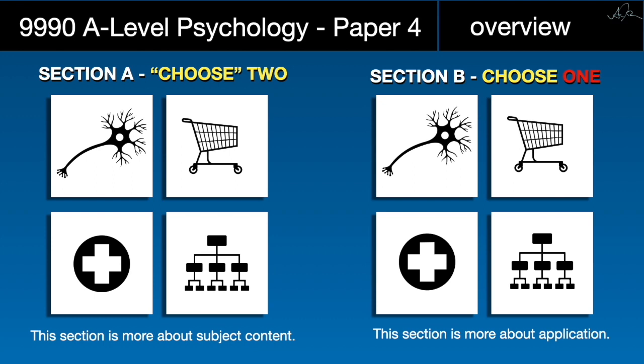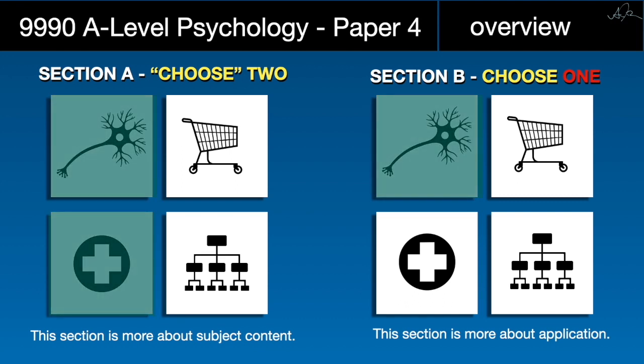For the most part, you're going to look at the two areas you covered with your teacher. Section A is more about subject content — you either know it or you don't. Section B is more about the application of methodological ideas, and even if you never sat A-level, you could answer many of those questions based on your AS experiences — it's very transferable from Paper 2. In our case, students will probably choose Clinical and Health, then choose only one for Section B.